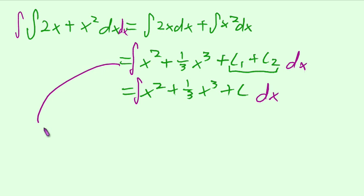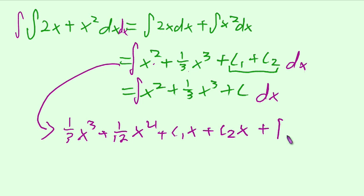So let's start with this one first. That's going to give us 1 third x to the third for this term plus 1 twelfth x to the fourth for this term plus c1x plus c2x plus another integration constant, d.